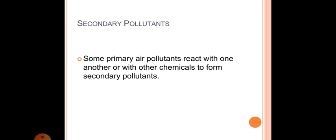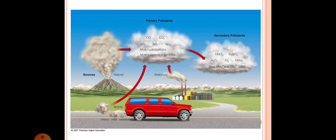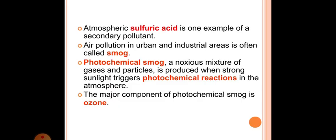Secondary pollutants: Some primary air pollutants react with one another or with other chemicals to form secondary pollutants. Atmospheric sulfuric acid is one example of a secondary pollutant. Air pollution in urban and industrial areas is often called smog. Photochemical smog, a noxious mixture of gases and particles, is produced when strong sunlight triggers photochemical reactions in the atmosphere. The major component of photochemical smog is ozone.